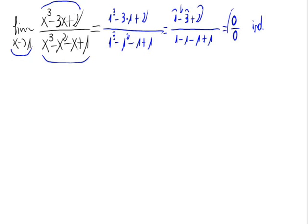This is an indetermination. By obtaining 0 divided by 0, we cannot get any value for the limit. So, for calculating this limit, we have to try to simplify this fraction of polynomials.